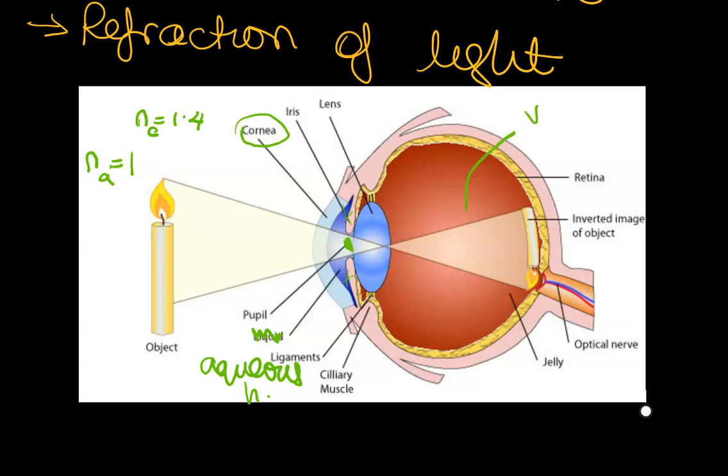Now this area here is called your vitreous humor, and you will find that your vitreous humor is again like your aqueous humor, very fluid-like. It looks like jelly-like gel and it just allows a slight amount of bending.